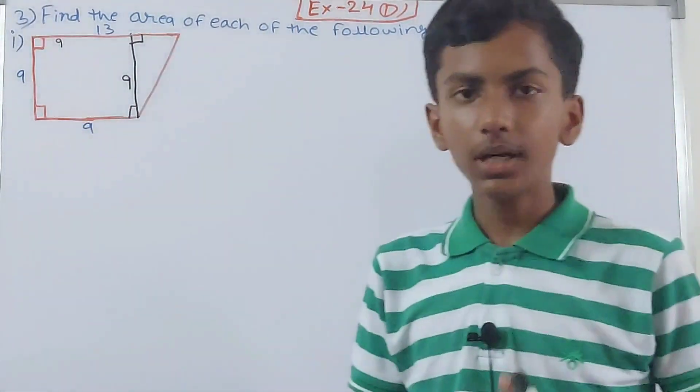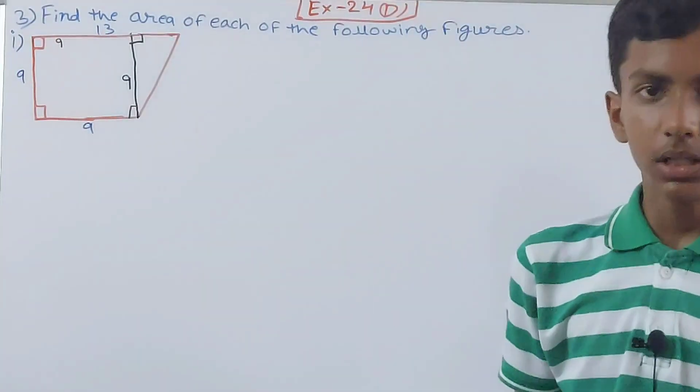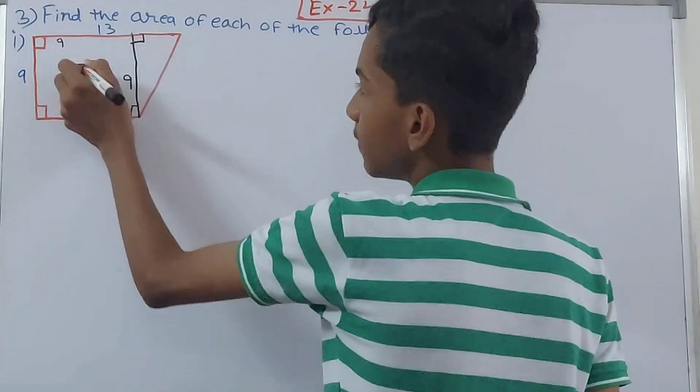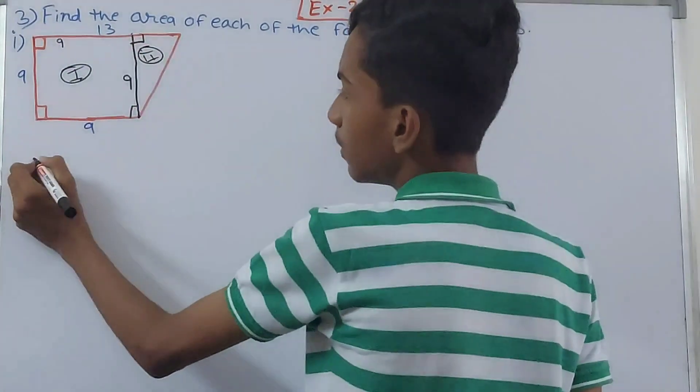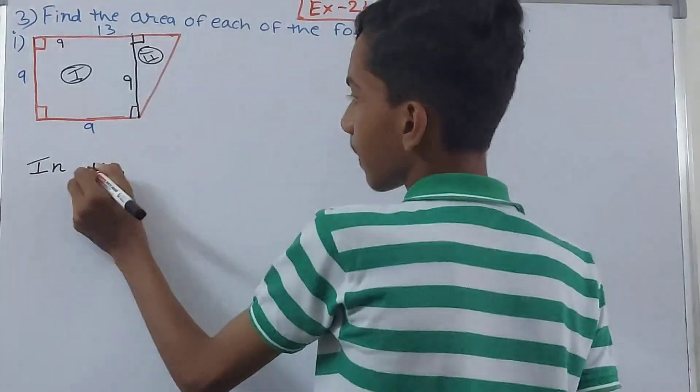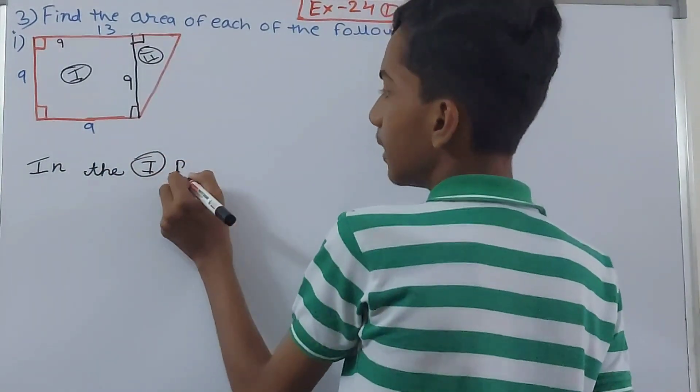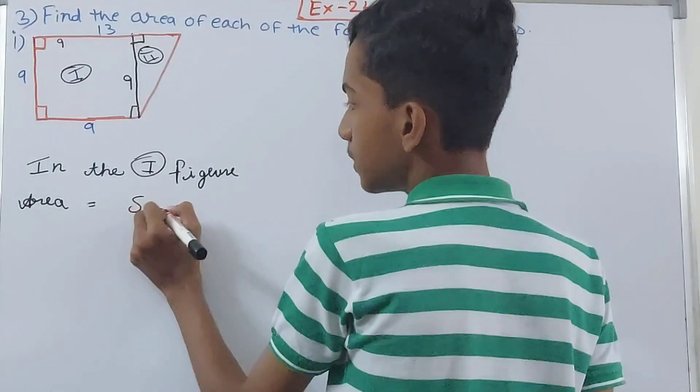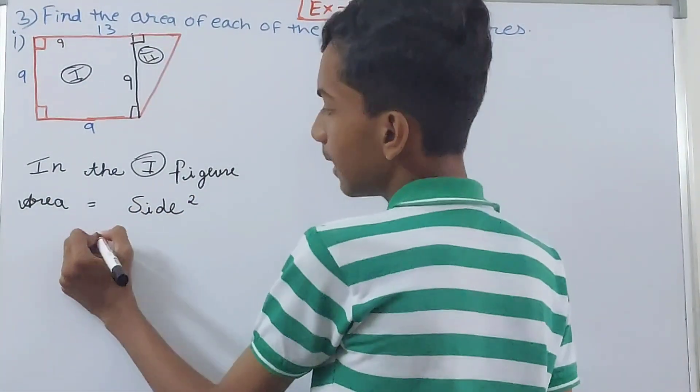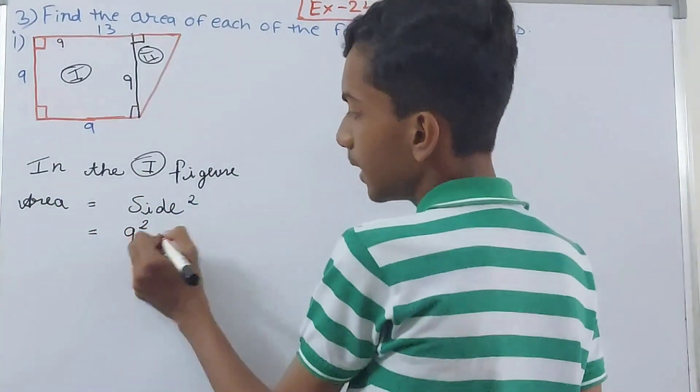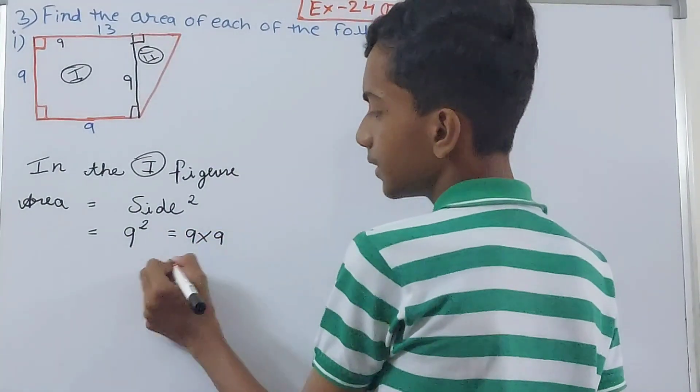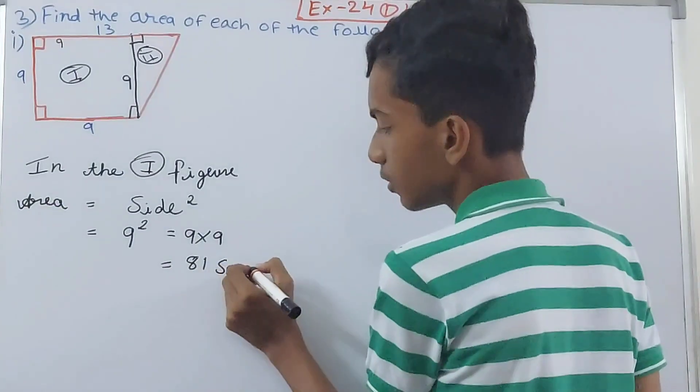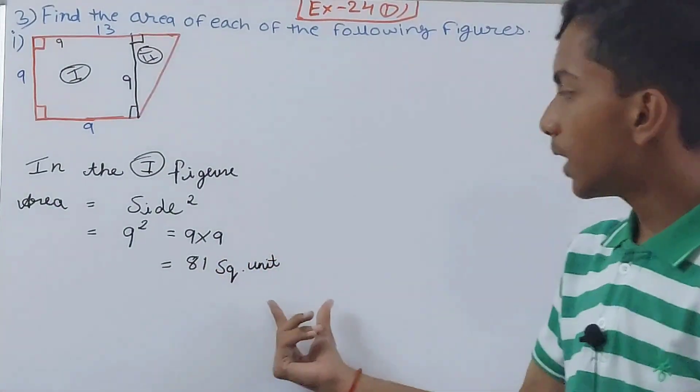Now we can use our formula, that is the area of square and area of triangle. In the first figure, area equals to side square because this is a square, so we will put side square that means 9 is the length of one side and then square. That will be 9 into 9 and what does that give us? 81, so the area becomes 81 square units.